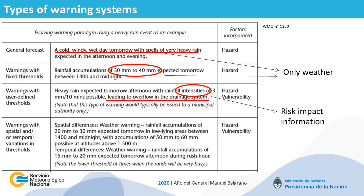There is another important note related to the text in italic in the third row. It says that this type of warning would typically be issued to a municipal authority only. This means that the type of warning also depends on the receiver and the action needed to be taken. Probably, the implementation of impact-based warnings also implies the capability of issuing different types of warnings to different users given the same weather condition. This requires human and technical resources.